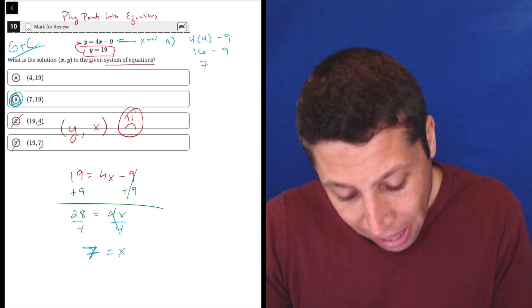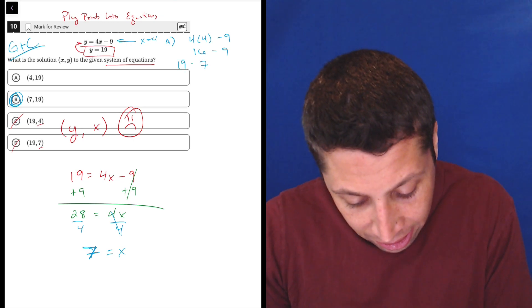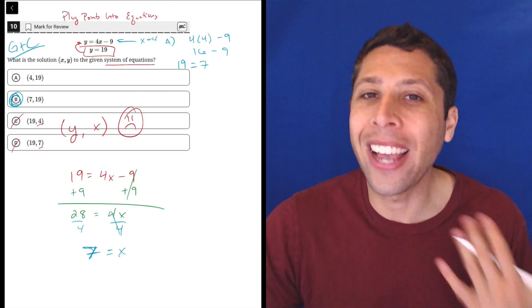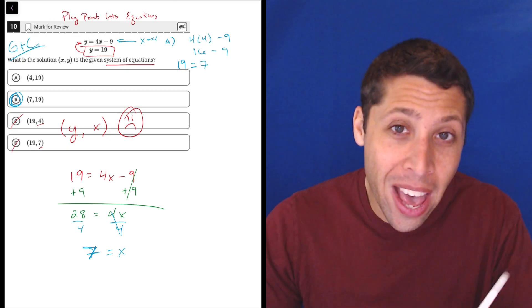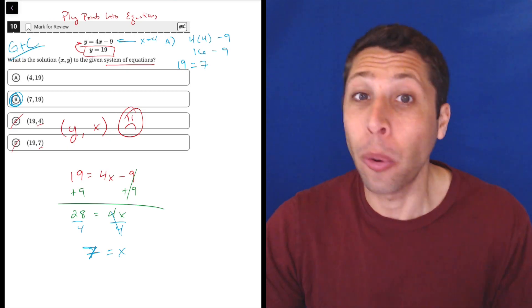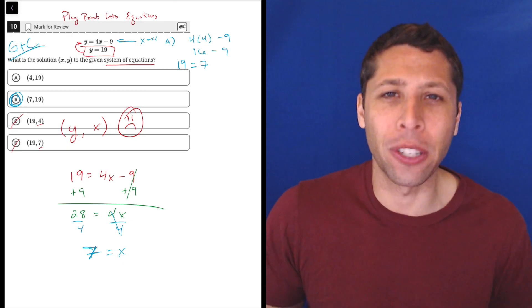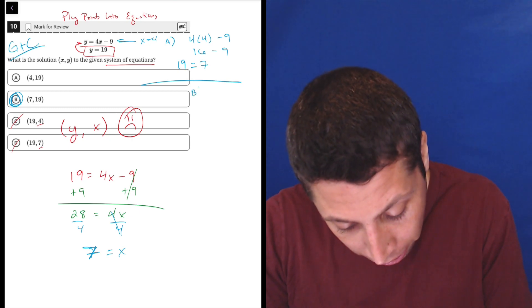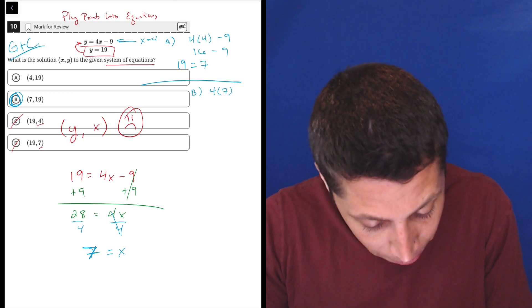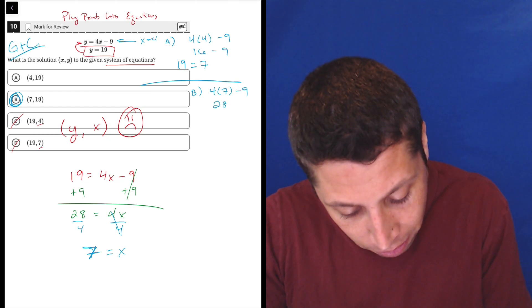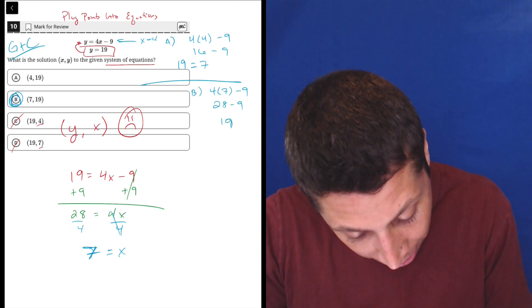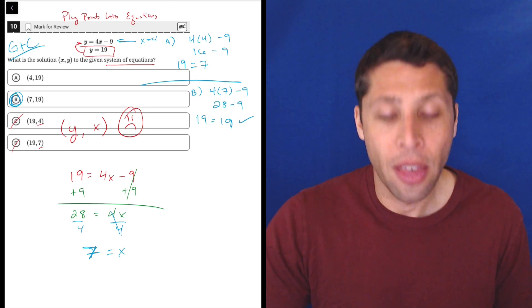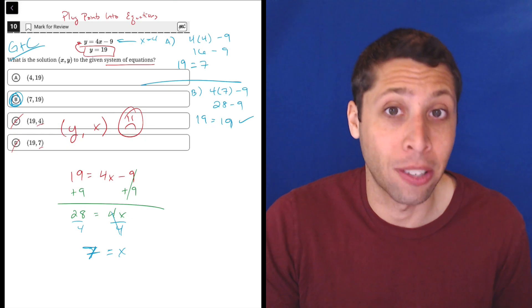So basically that's no good because we were told that y is 19. So if we substitute that in as well, 19 and seven are different numbers. So choice A doesn't work because the point doesn't fit onto that equation. It gives us a nonsensical result. We would want something like seven equals seven, which is what happens when we plug in choice B. So four times seven minus nine, four times seven is 28 minus nine is 19. And so look, there we go. 19 is equal to 19. That's exactly what we wanted. That's exactly how we know that choice B is correct.